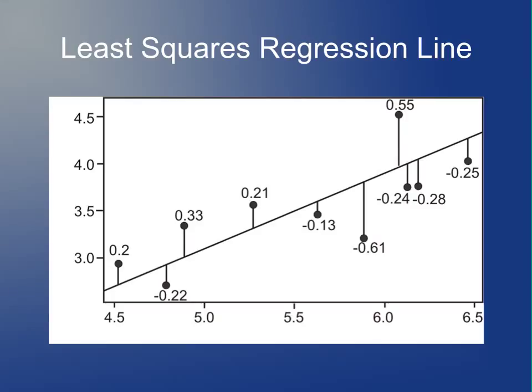If you're curious why we minimize the sum of squared errors, it's because it's easier to calculate. There are other regression methods that minimize the sum of absolute values of errors, but in practice they're almost never used because they require specialized software, whereas it's very easy to calculate the least squares line.